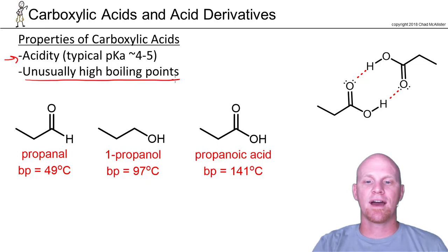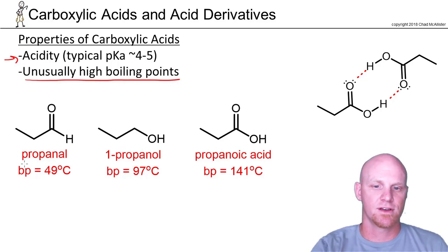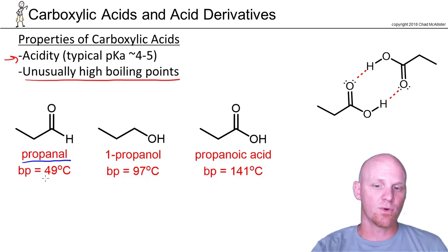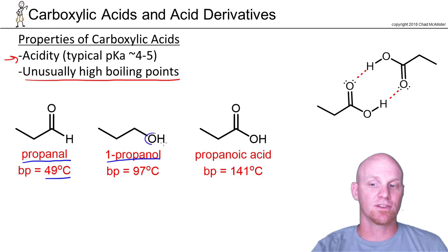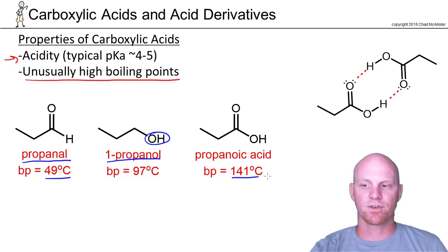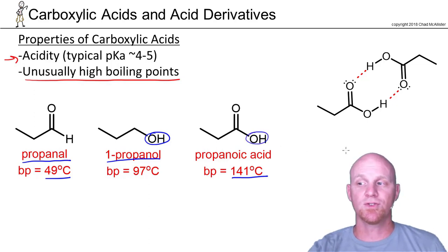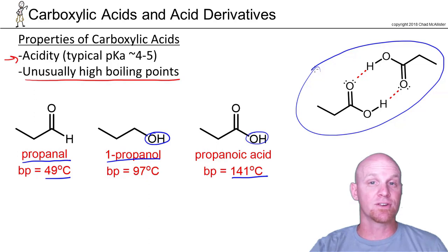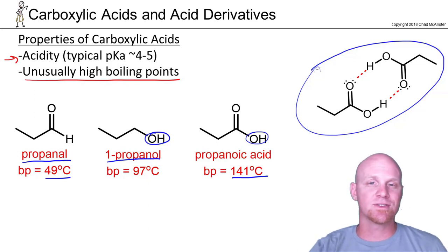The new thing here is that carboxylic acids have unusually high boiling points — something we might not expect based on comparisons. Propanal, an aldehyde, is not capable of hydrogen bonding and has a boiling point of 49°C. 1-propanol, because it has an OH bond, is capable of hydrogen bonding and has a significantly higher boiling point of 97°C. But propanoic acid jumps all the way to 146°C. The reason is that molecules can hydrogen bond with each other twice and dimerize. Because the molecule appears twice as big as it really is, it has much greater surface area, greater overall intermolecular forces, and a much higher boiling point as a result.